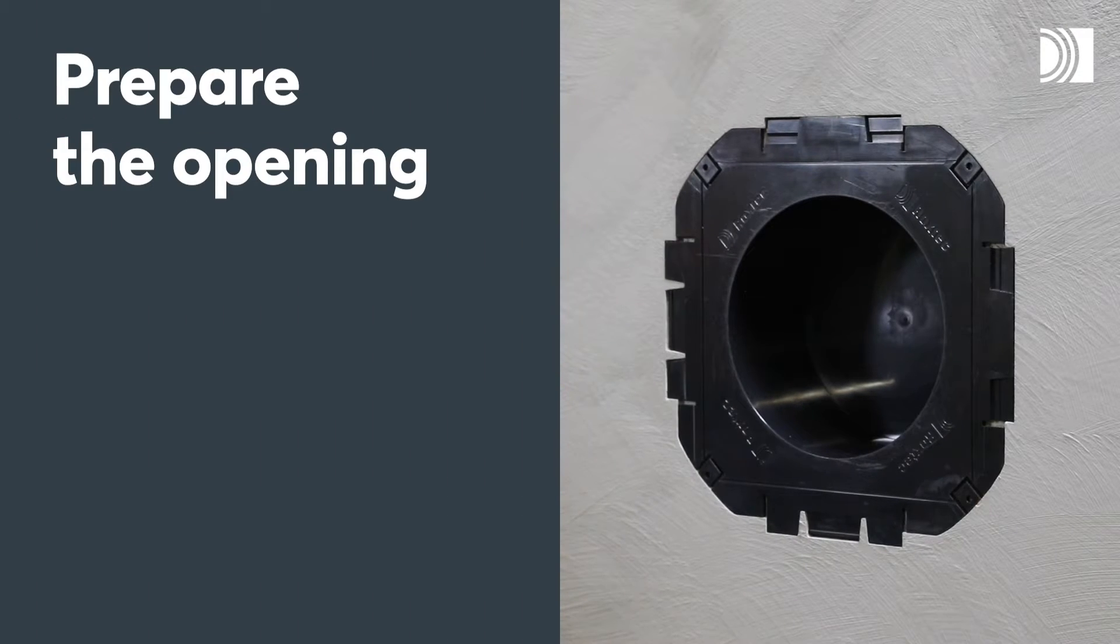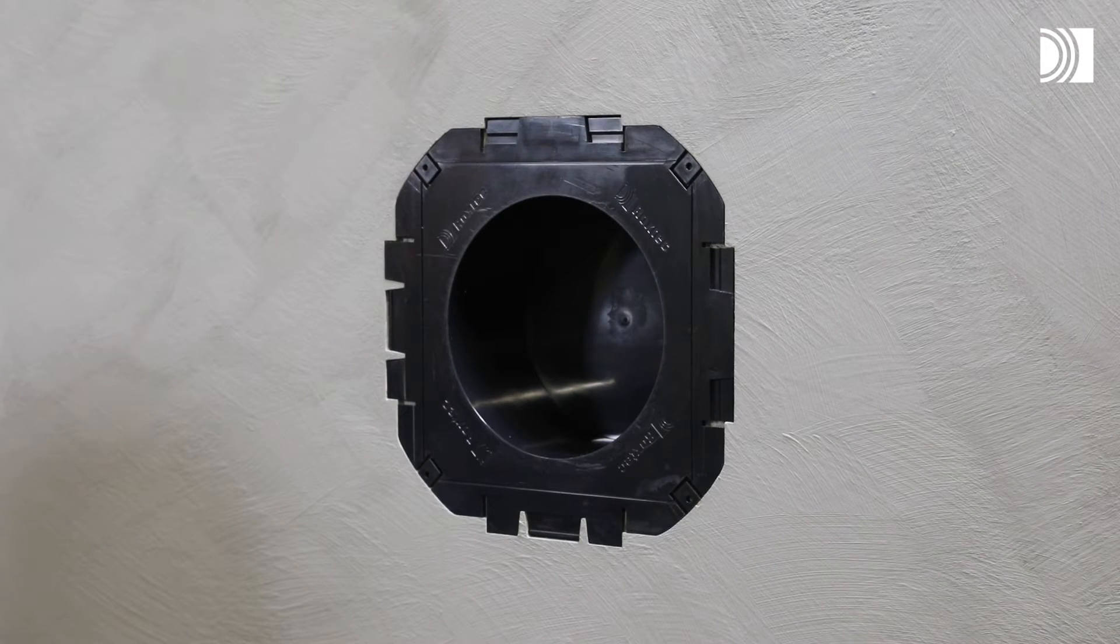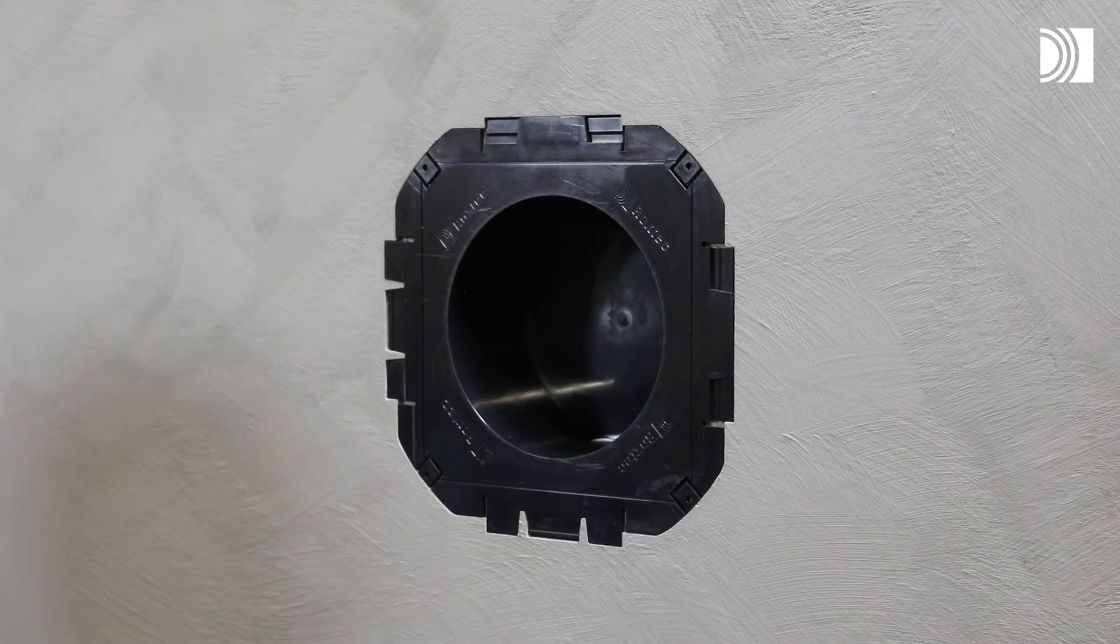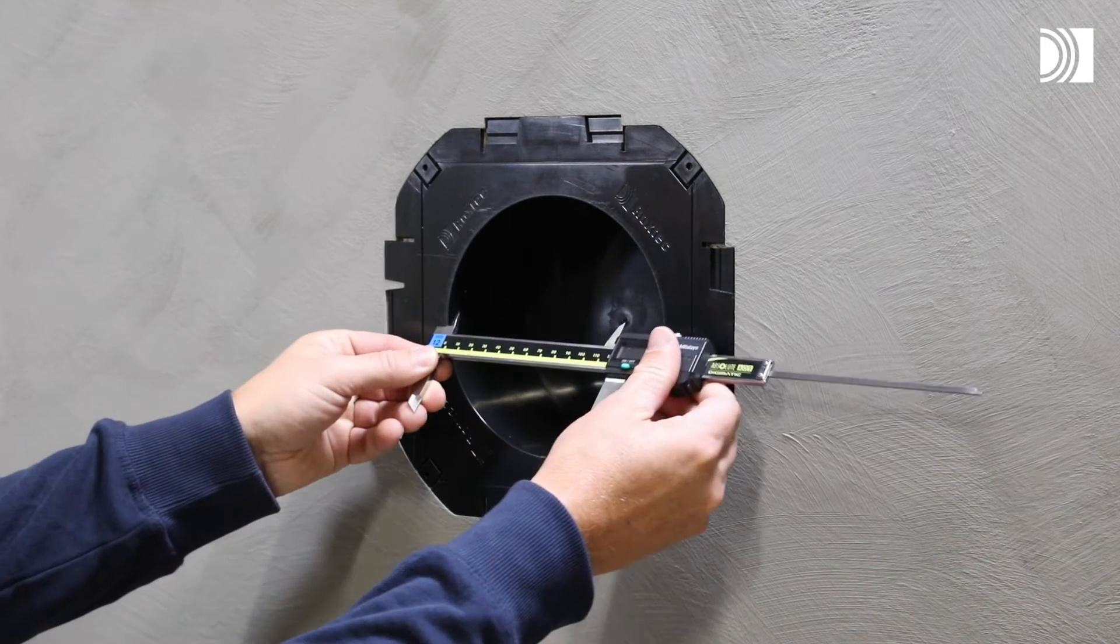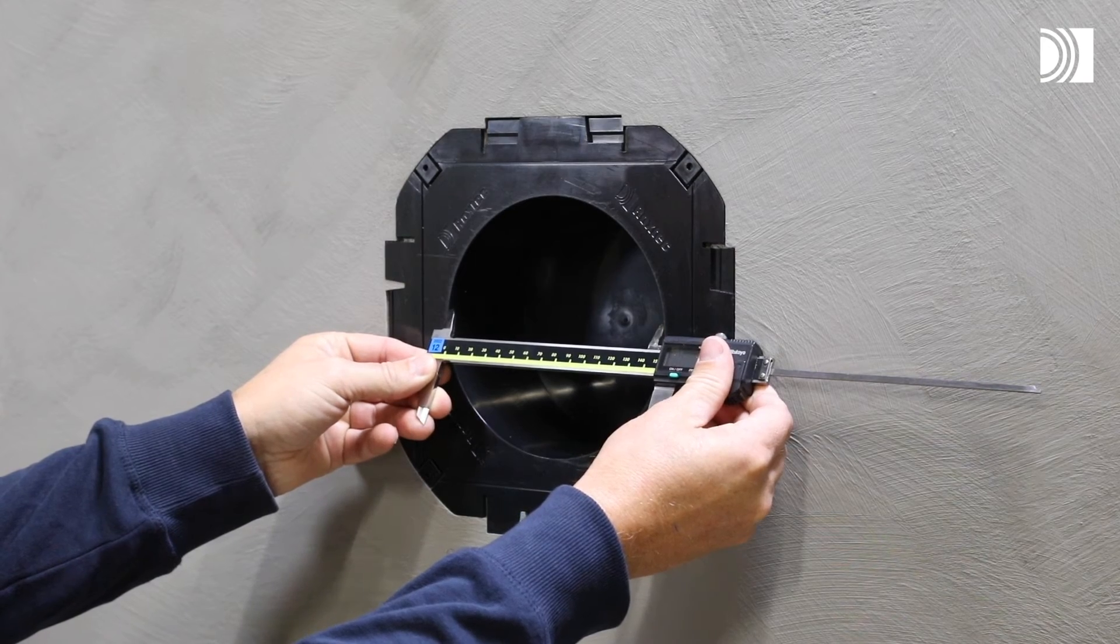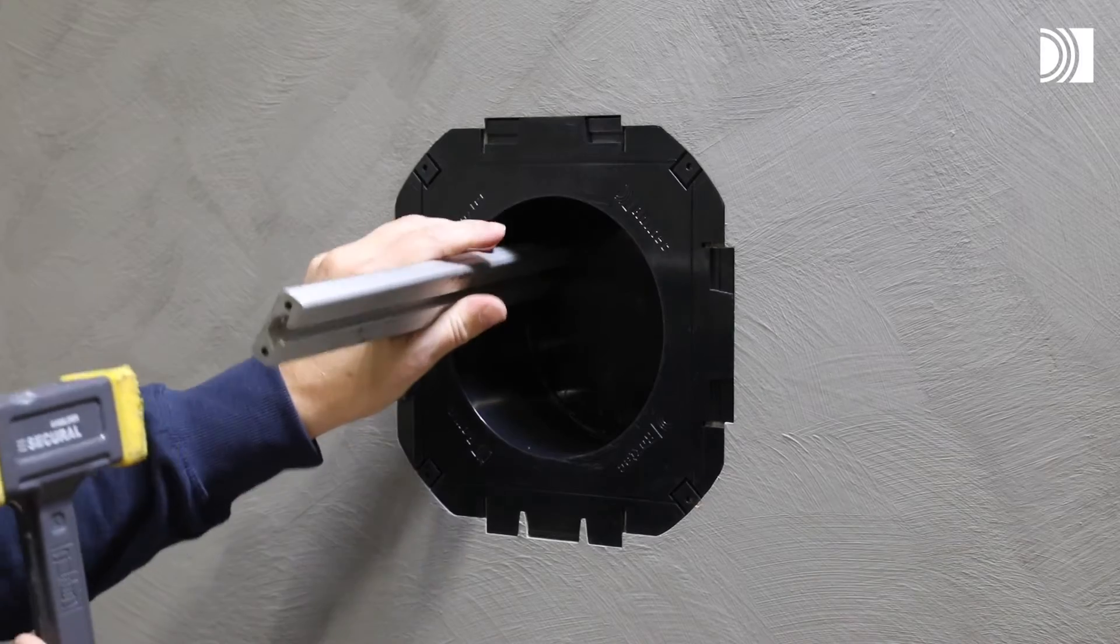Prepare the opening. In this case, the transit is installed in a Roxtec knockout sleeve. Start by verifying the aperture. Remove the knockout of the sleeve.